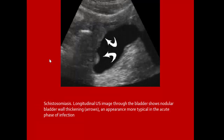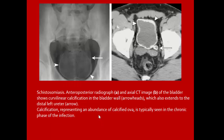Schistosomiasis on ultrasound shows nodular bladder wall thickening — appearance more typical in the acute phase of infection. Schistosomiasis on plain radiograph and axial CT shows calcification of the bladder wall extending to the distal left ureter, representing calcified ova typically seen in the chronic phase of infection.